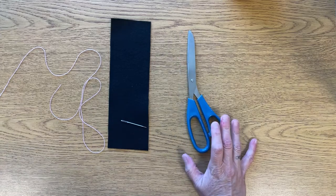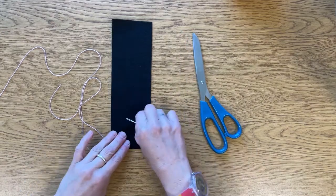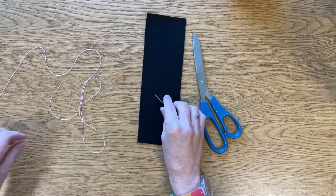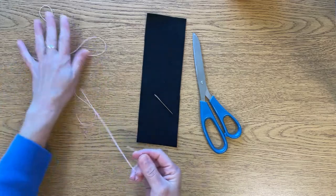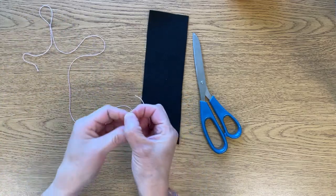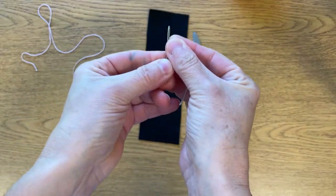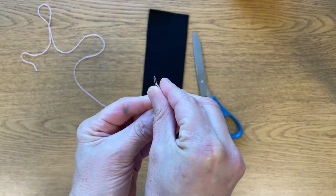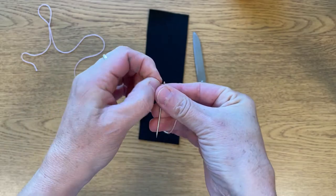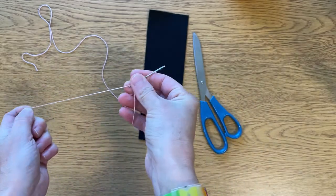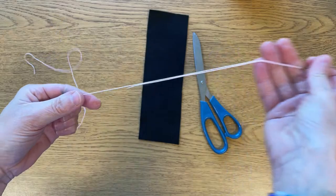All right, we're ready to thread our needles. Take the crochet thread and hold the very end of it in one hand and your needle in the other. Put the end of the crochet thread through the eye of the needle and pull through about eight inches.